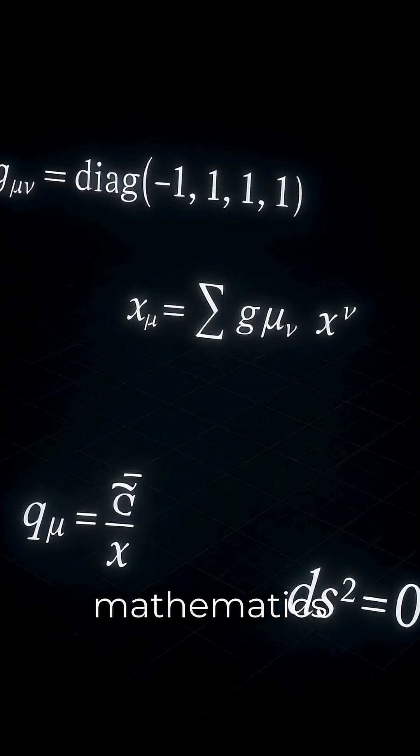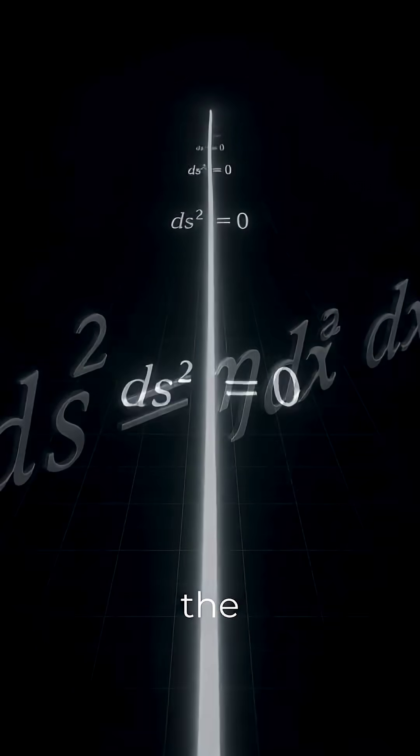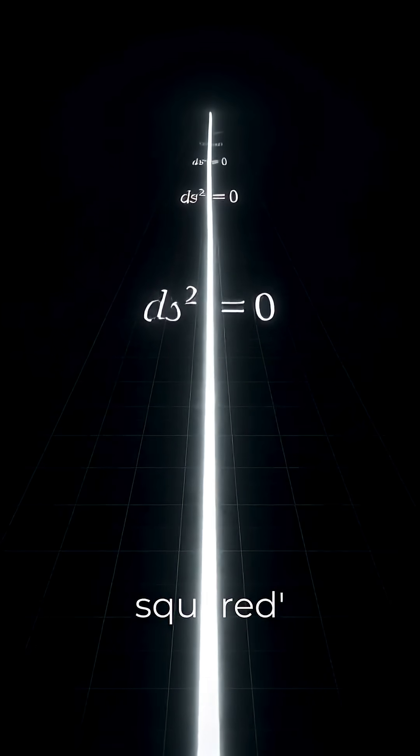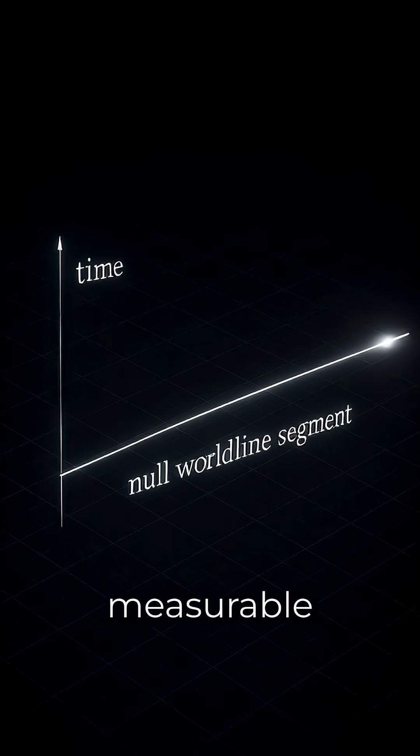It's embedded in the mathematics of spacetime. In relativistic physics, the interval ds squared along a photon's trajectory is zero. This means the photon's world line contains no measurable time.